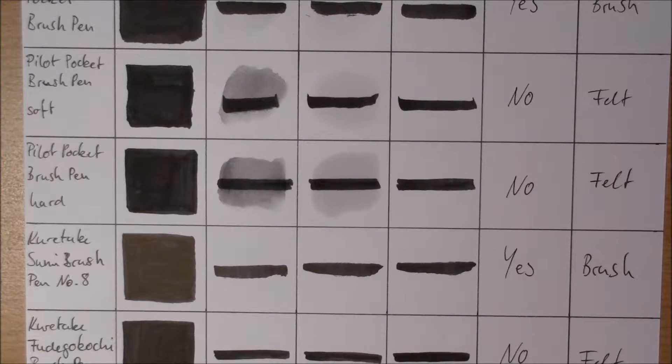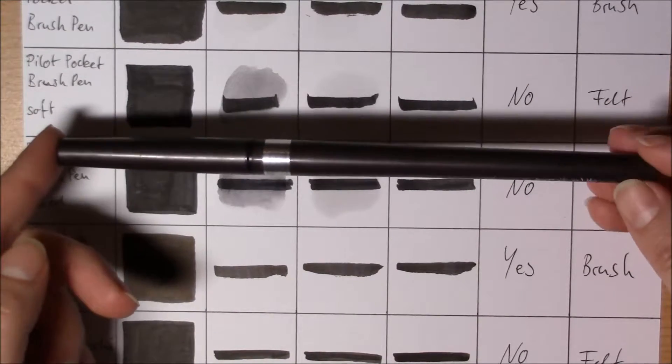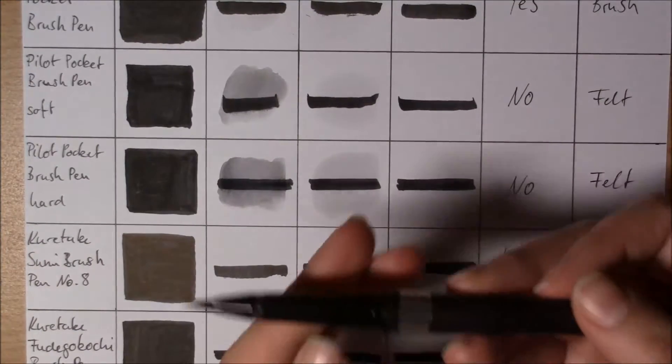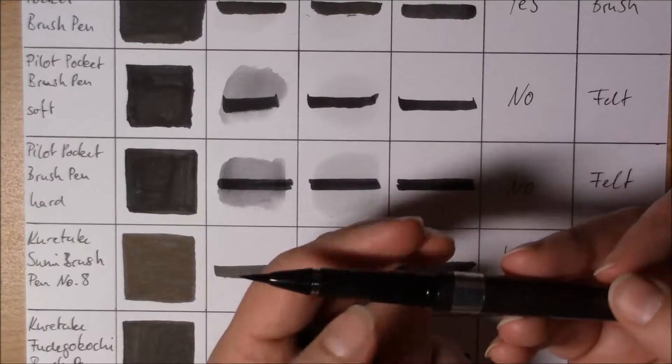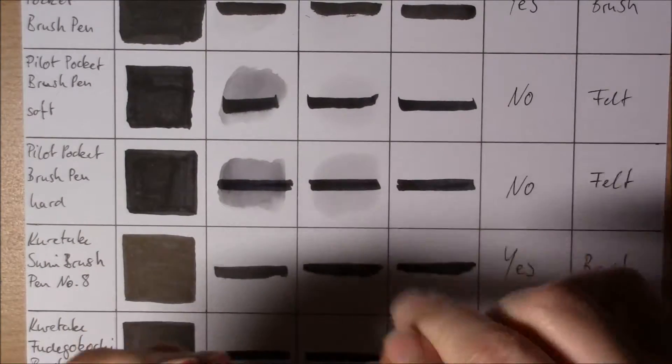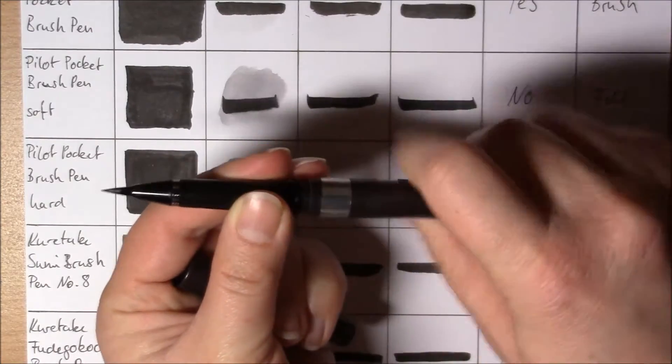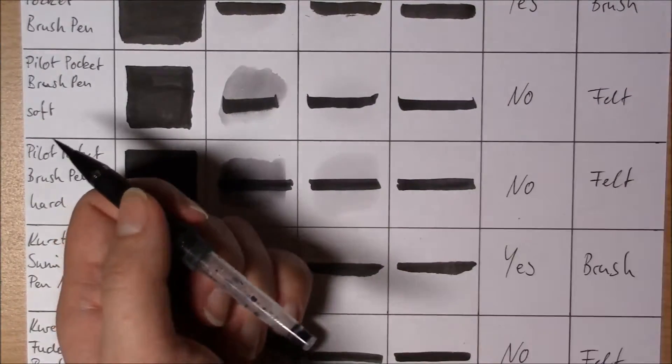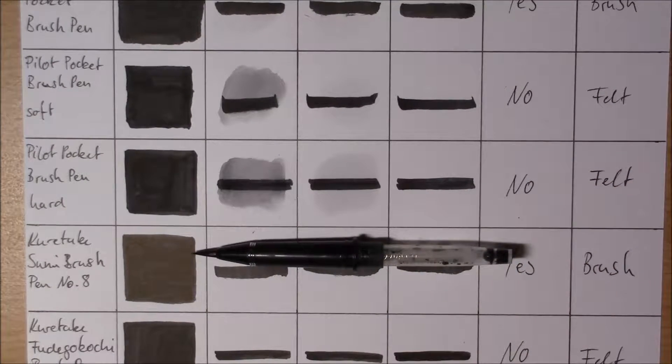Now the next one, Sumi Brush from Kuretake. This is the number 8. It's the cheaper one with the plastic body. It has a brush tip. And there aren't only refills, but also you can get this part here again if you use the pen so much that it got empty.